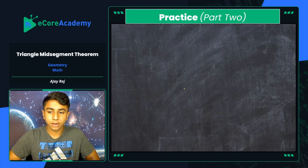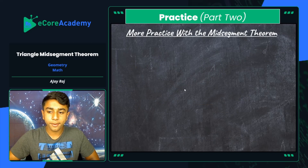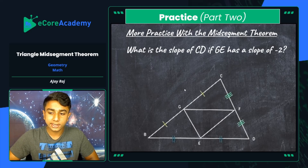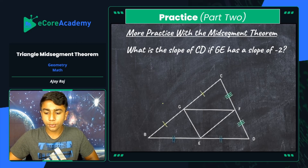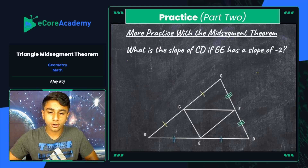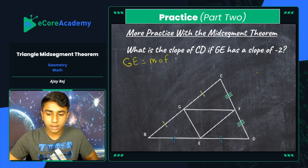Let's move on to our second type of problem, practice part two. This uses a different component of the mid-segment theorem relating to slope. The question is: what is the slope of CD in this triangle if GE has a slope of negative 2? We are given line segment GE, one of the mid-segments of triangle CBD, with a slope of negative 2. So GE has slope m = −2.